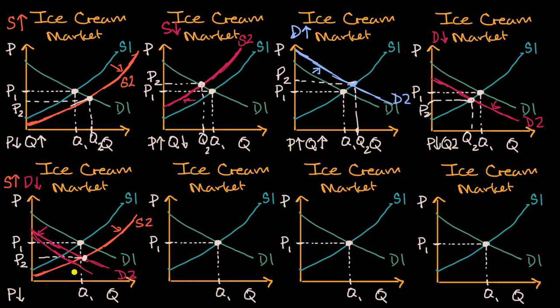So actually, in this situation, price for sure is going to go down. You have more competition amongst the suppliers, and there's less demand. But it's unclear what happens to quantity. So quantity in this situation is indeterminate, we could say.